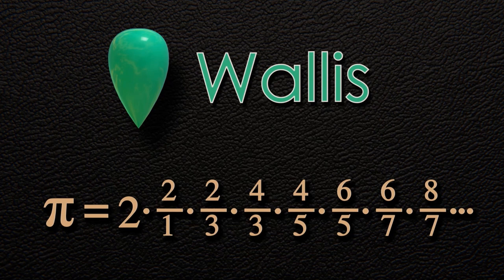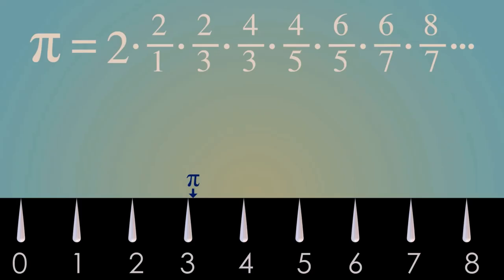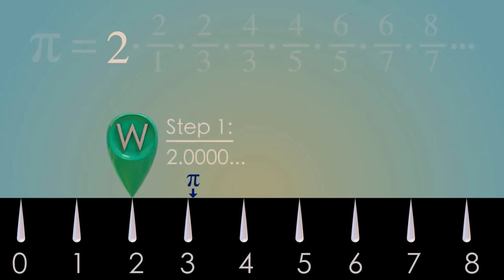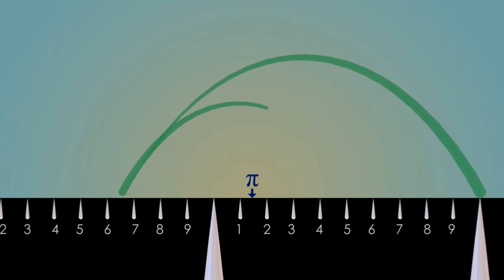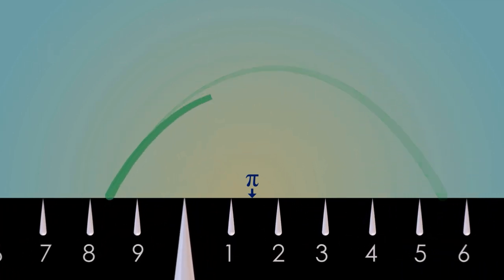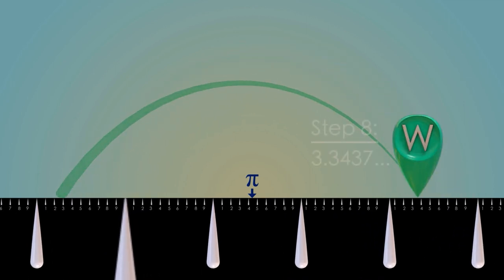Here's what this one looks like in practice. You start with 2, then you multiply it by 2 over 1 to get 4. I'm going to let this one run, and we're going to keep up with it as it descends towards pi. The thing to notice is just the slow and steady pace with which this approaches the quantity pi. After 8 steps, we get to 3.3437, so we're actually approaching pi very slowly.